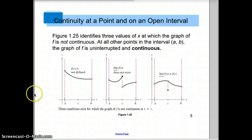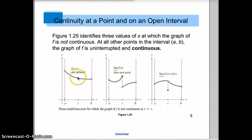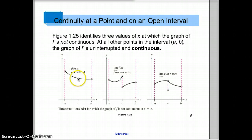In this graph, we've got three graphs. There are three values of x at which the graph of f is not continuous. At this hole here, f of c is not defined — there's no y-value there at that hole. The graph is not continuous at that point. At c, the graph is not continuous; if you drew it, you'd have to pick up your pencil, draw a circle, and then draw the rest of the graph.